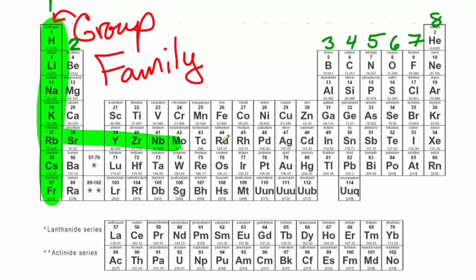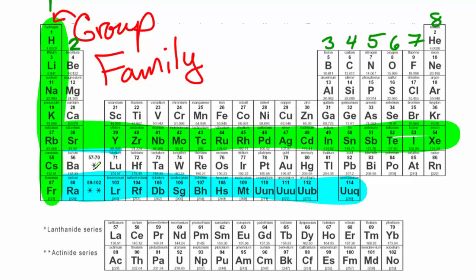So these right here going left to right, we refer to these as periods. So left to right, these are periods. The way I like to remember that is that a period in English, I write a sentence and I end it with a period. Sentences go left to right and they end with a period. So these are periods. These are groups. As I move from the top to the bottom of a group, the atomic number gets bigger and the mass gets bigger. As I move from left to right in a period, the atomic number gets bigger and the mass gets bigger.